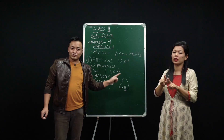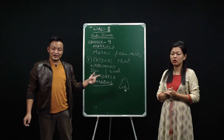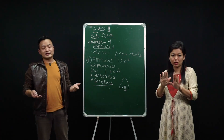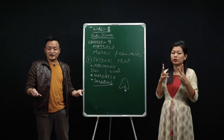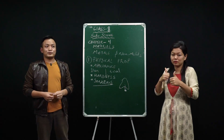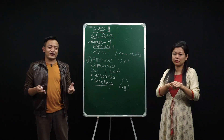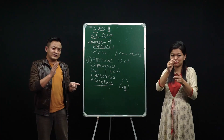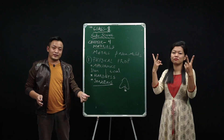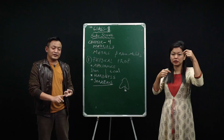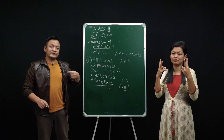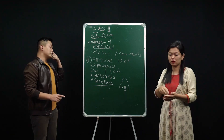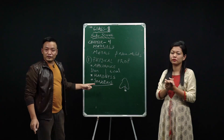Do you expect the same sound with wood? No — with wood the sound will be different. Another example: during an exam, suppose you have a two-rupee or five-rupee coin and you drop it — the sound will be different compared to if you drop your question paper. So from here we conclude that metals are sonorous.